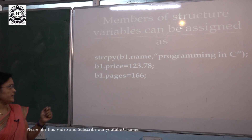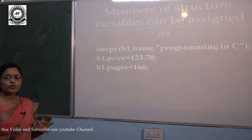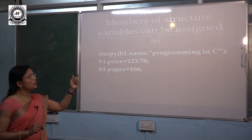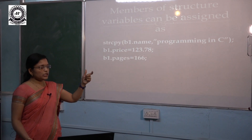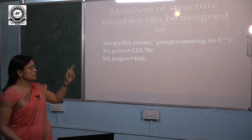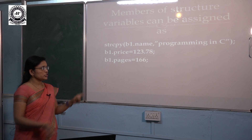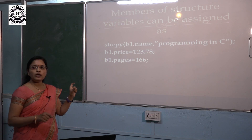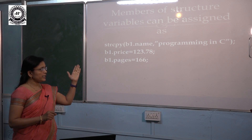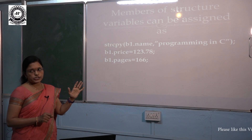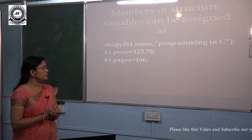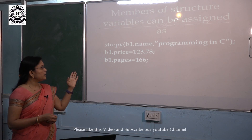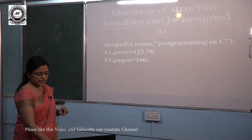Members of a structure can be assigned one by one. To assign a string to a member, since it is a string, we use the strcpy function — for example, strcpy(b1.name, "Programming in C") — which assigns the string to b1.name. For decimal and integer values, we simply use the assignment operator, for example b1.price = 123.78 and b1.pages = 166.